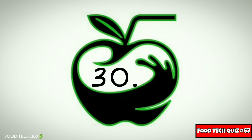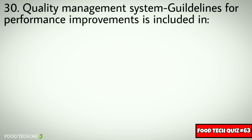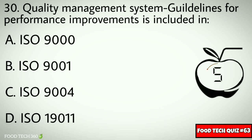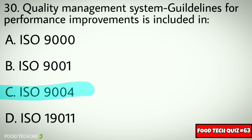Question No. 30. Quality Management System — Guidelines for Performance Improvements is included in: Options: A. ISO 9000, B. ISO 9001, C. ISO 9004, D. ISO 19011. Correct answer: C. ISO 9004.